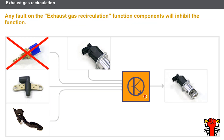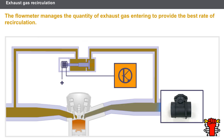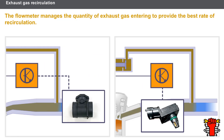Any fault on the exhaust gas recirculation function components will inhibit the function. Fitted after the air filter, the flow meter measures the mass of clean air taken in by the engine. This information allows the computer to manage the quantity of exhaust gas entering to provide the best rate of recirculation. Vehicles not equipped with a flow meter have an air temperature sensor; this information, linked to the turbocharging pressure, allows the computer to calculate the mass of air entering.